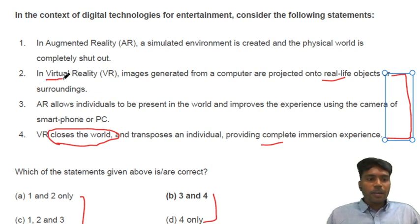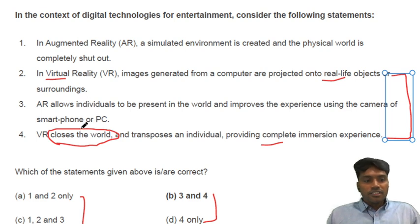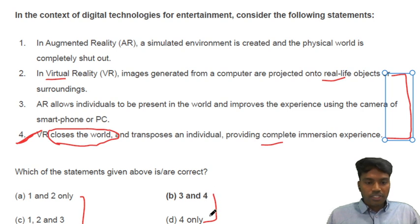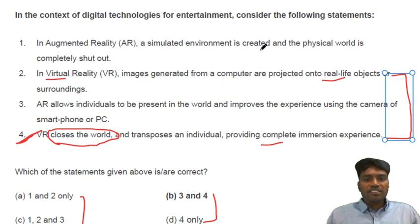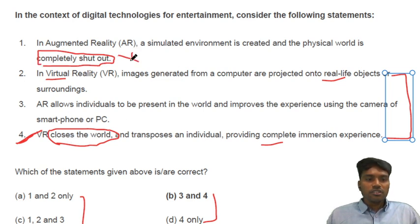Now we apply the etymology tick term. What does 'virtual' mean? It means not in the real world. So the word 'virtual' aligns more with statement four, which says it closes the world — providing complete immersion. Now reading statements one and three: statement one says in augmented reality, the physical world is completely shut down. But statement three says augmented reality allows you to be present in the world. If one is correct, the other has to be wrong. So the answer is statements three and four.